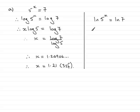And again, you'd use the power rule and get x natural log of 5 equals the natural log of 7. Divide both sides by the natural log of 5, and x would equal natural log of 7 over the natural log of 5.